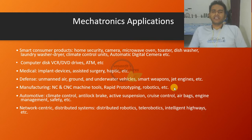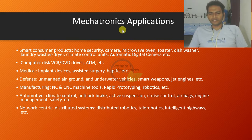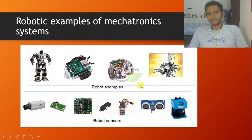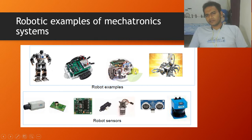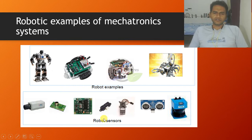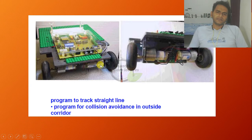Mechatronics deals with every problem that has a perfect solution, and including mechatronics gives a much better experience. In the robotics example, we have humanoid robots and mobile robots including tri-wheeled, two-wheeled, and legged robots. Sensors associated with these systems give input, and the systems work accordingly with the actuators. A simple example is a robot that can track a line and avoid collision.